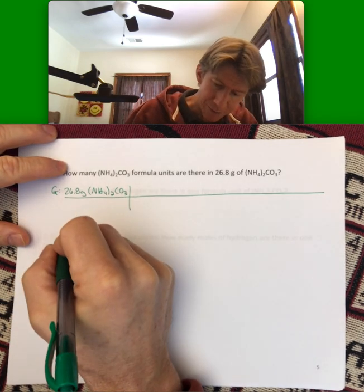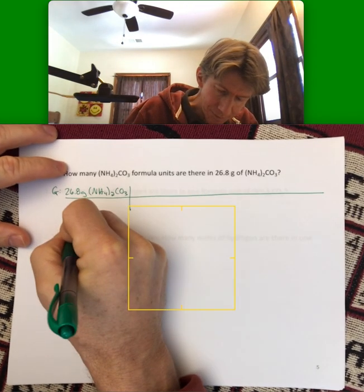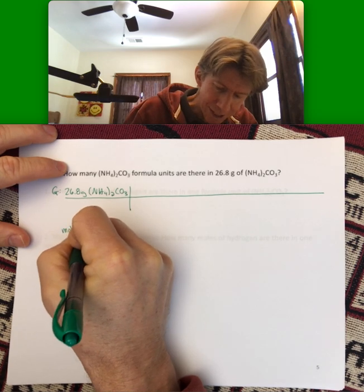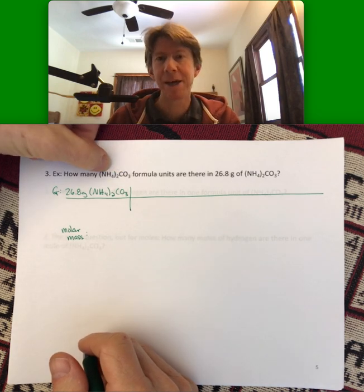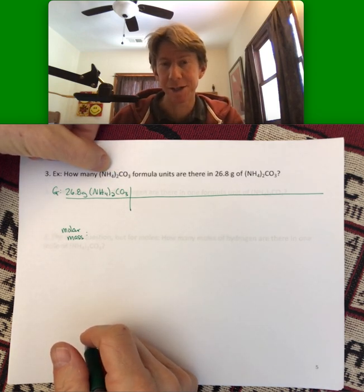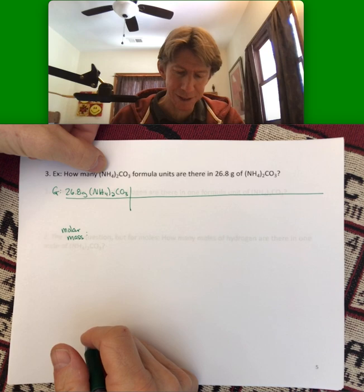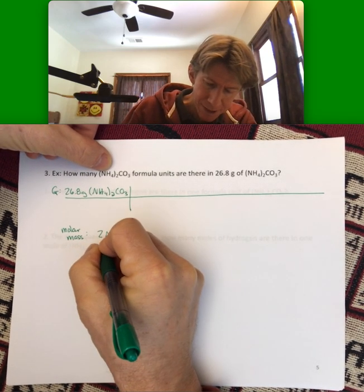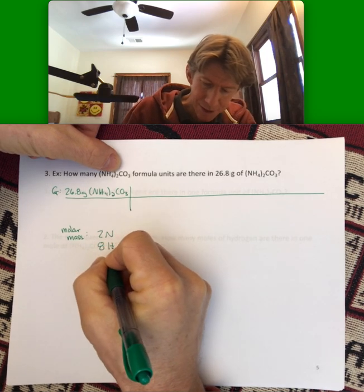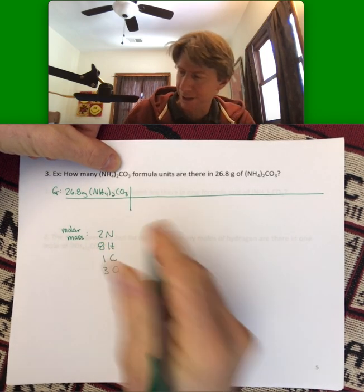All right, so molar mass is a little more complicated now because now we have to go through and do all of our elements, make sure we hit up all of the right numbers of atoms. So molar mass is going to be two nitrogens, eight hydrogens, one carbon, and three oxygens.